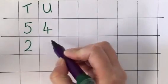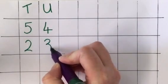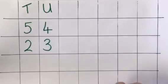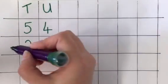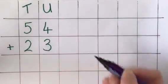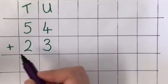So it's really important to get the 23 in the correct columns beneath the 54. That is really important for when the calculations become more tricky later on.